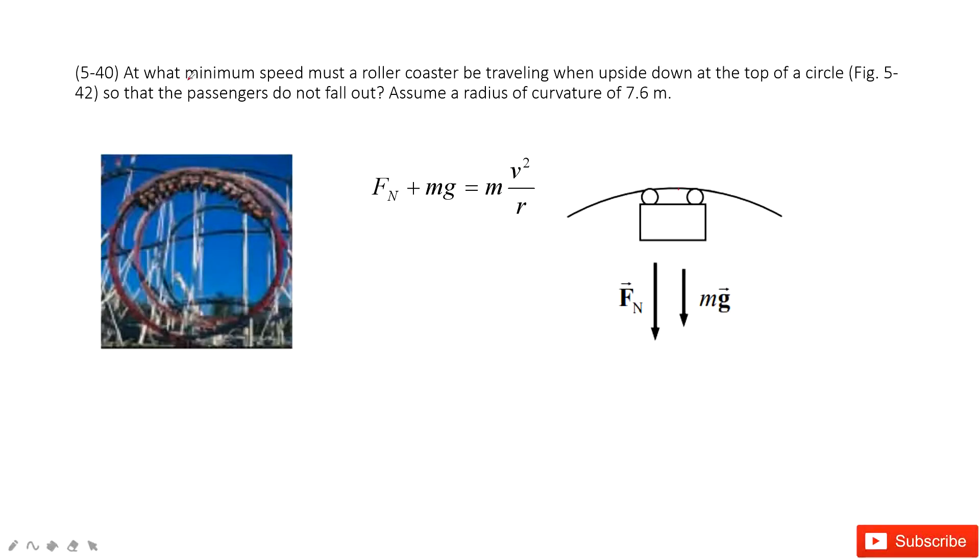We want to find when the speed becomes the minimum. So v is minimum, so that means the normal force can be zero. There is no interaction between the railway and the car.